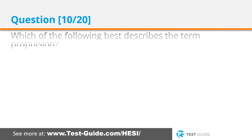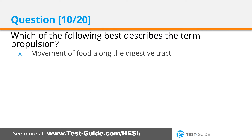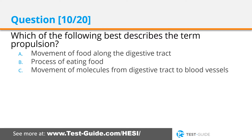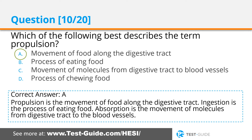Question ten: Which of the following best describes the term propulsion? Options: movement of food along the digestive tract; process of eating food; movement of molecules from digestive tract to blood vessels; process of chewing food. Correct answer A. Propulsion is the movement of food along the digestive tract. Ingestion is the process of eating food. Absorption is the movement of molecules from the digestive tract to the blood vessels.